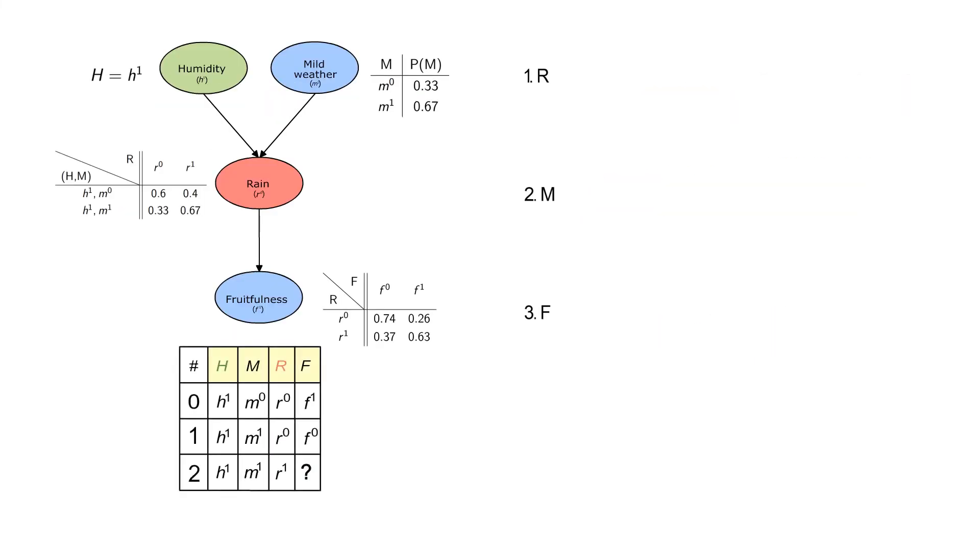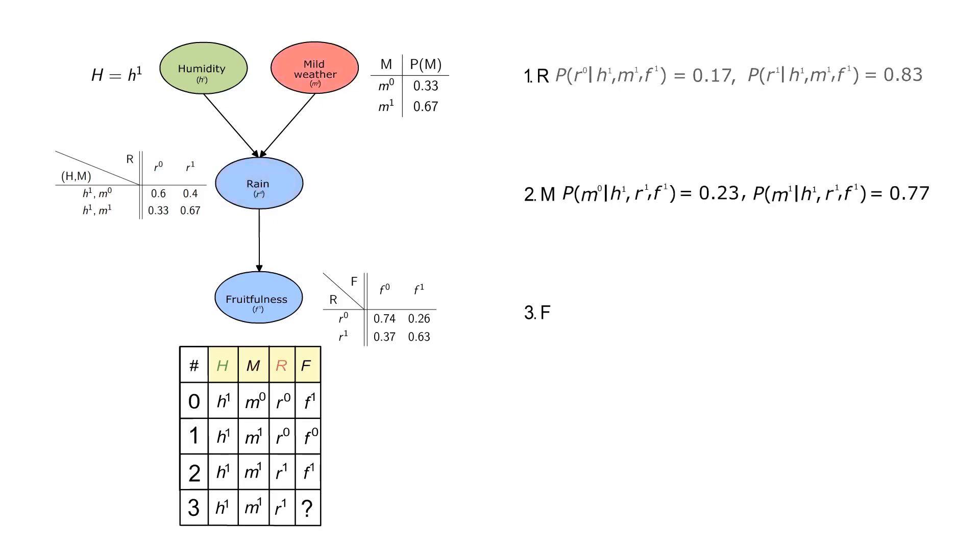We do this resampling of unobserved variables multiple times. The more iterations we do, the closer the sampling distribution gets to the true posterior distribution.